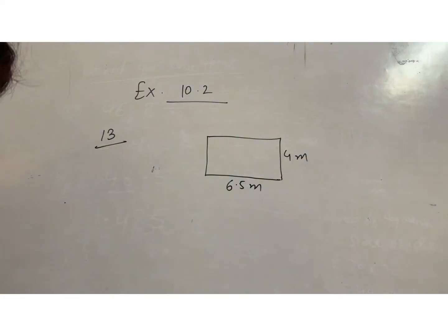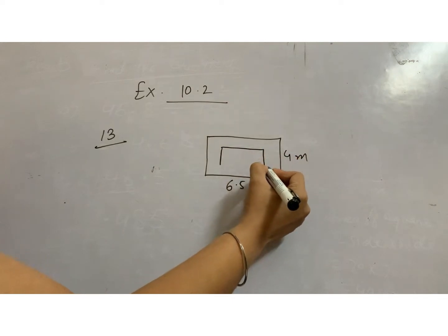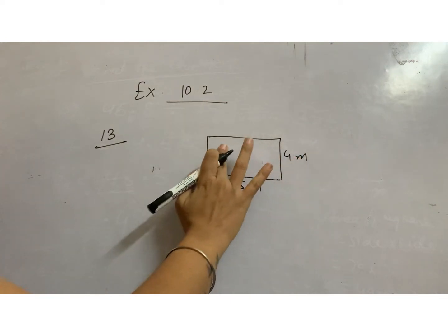And a carpet of side 3 meters is laid on the floor. So they are just here spreading the square carpet whose one side is 3 meters.